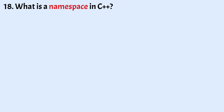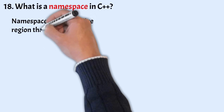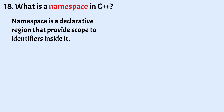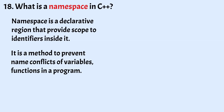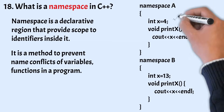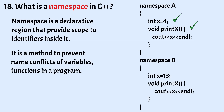Now let us understand what is a namespace in C++. Namespace is a declarative region that provides scope to identifiers inside it. It is a method to prevent name conflicts among variables and functions in a program. In a big project, there can be a chance that there may be two or more variables or functions with the same name, which will result in an error when compiled. To resolve this issue, namespace is introduced in C++. Through the use of namespace, we can use the same variable name x and function name printx in the same program.